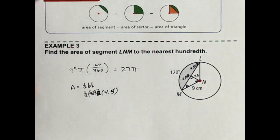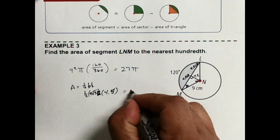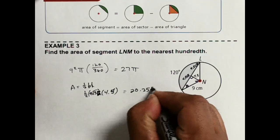All right, so putting that into the calculator, this simplifies to 20.25 square roots of 3.